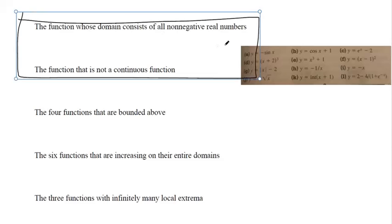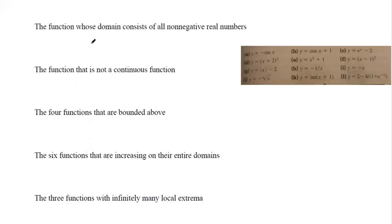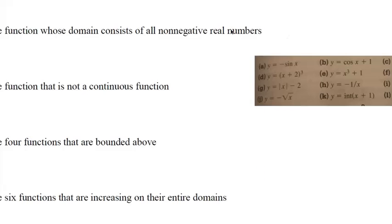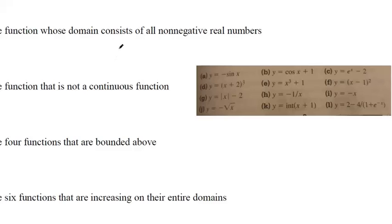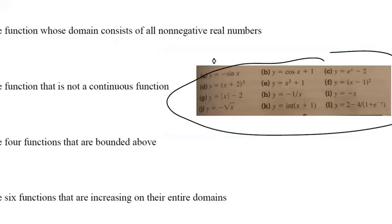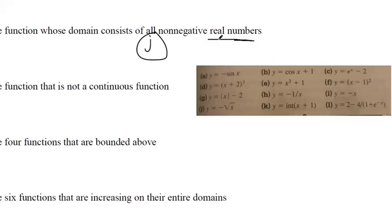These two are asking us to use specific functions; everything else is asking about the 12 basic functions in the textbook. The function whose domain consists of all non-negative real numbers — you can't have negatives, you can't take square roots of negative numbers. Every other function allows negative inputs, but function j only allows non-negative numbers, so j is the answer.